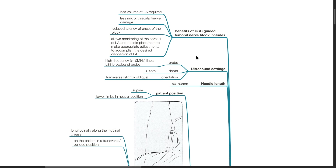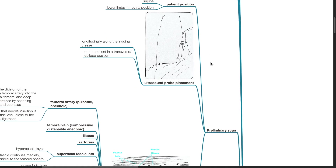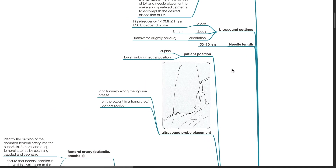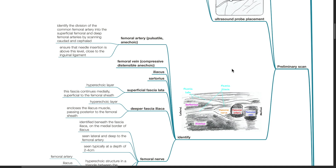Preliminary scan. Patient position is supine with lower limbs in neutral position. Ultrasound probe placement is longitudinally along the inguinal crease in a transverse or oblique position. Identify the femoral artery, which is pulsatile and anechoic. Identify the division of the common femoral artery into the superficial femoral and deep femoral arteries by scanning caudally. Ensure that needle insertion is above this level, close to the inguinal ligament.